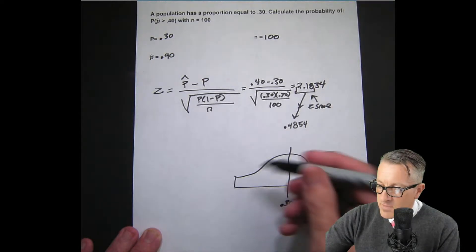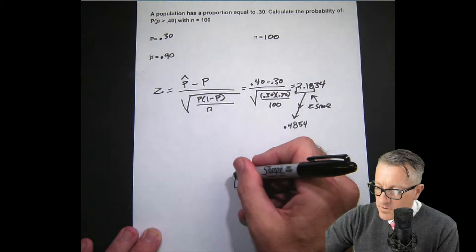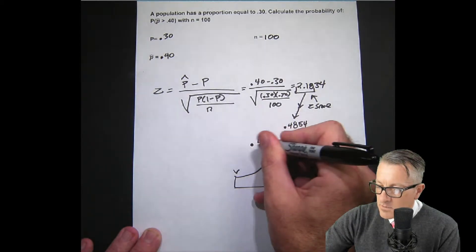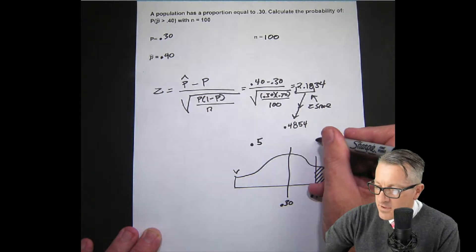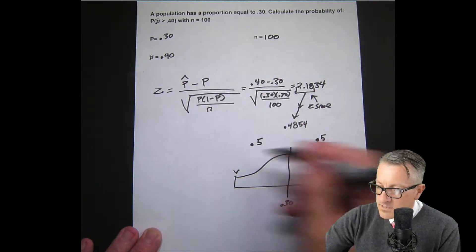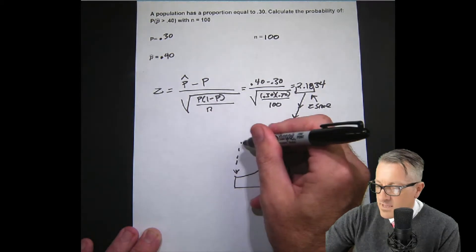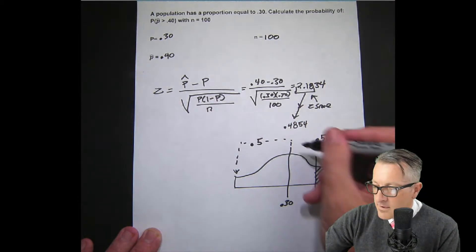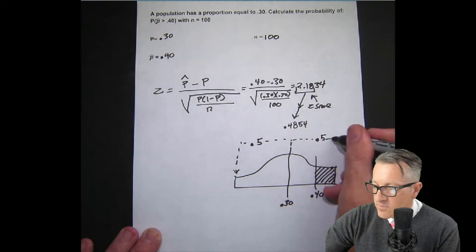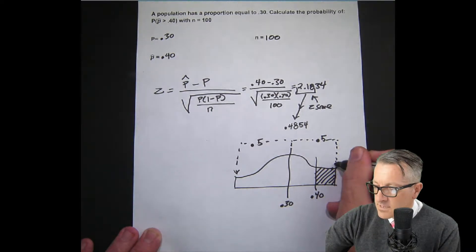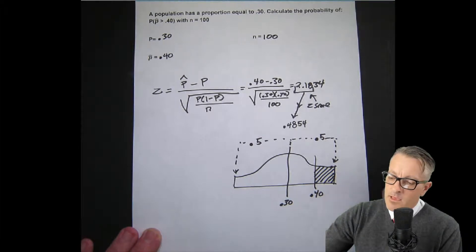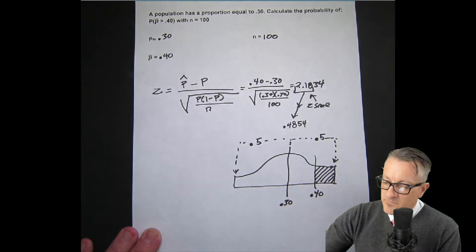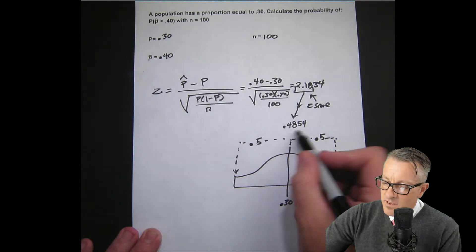A couple things here that may be obvious to you, but I'm going to plan it out once again. Each side is always 0.5, right? Because all of the probability has to equal one. This whole side is 0.5, this whole side is 0.5, and then we have this number right here.